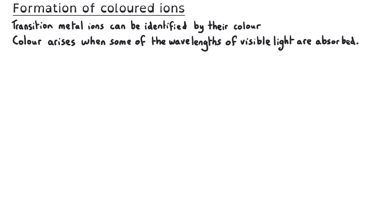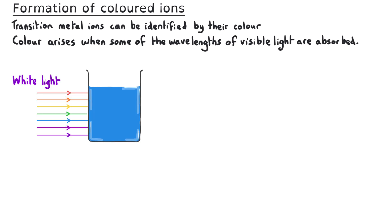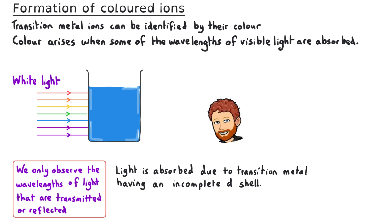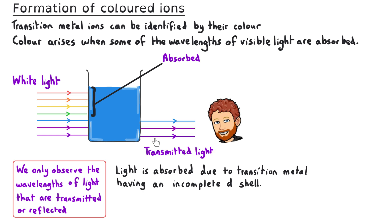Colour arises when some of the wavelengths of visible light are absorbed. For example, if white light is incident on a sample, some of the light is absorbed due to the transition metal having an incomplete D subshell. We only observe the wavelengths of light that are transmitted or reflected, and so if red, yellow and green light are absorbed, the remaining transmitted light will appear blue, as it is the complementary colour.